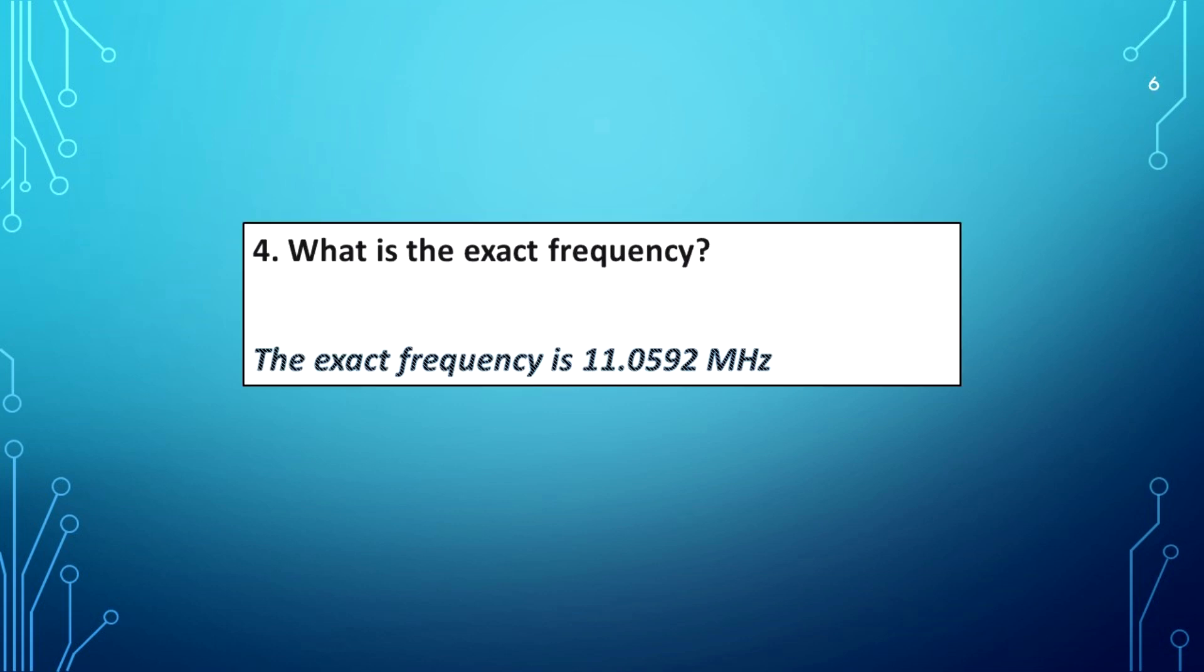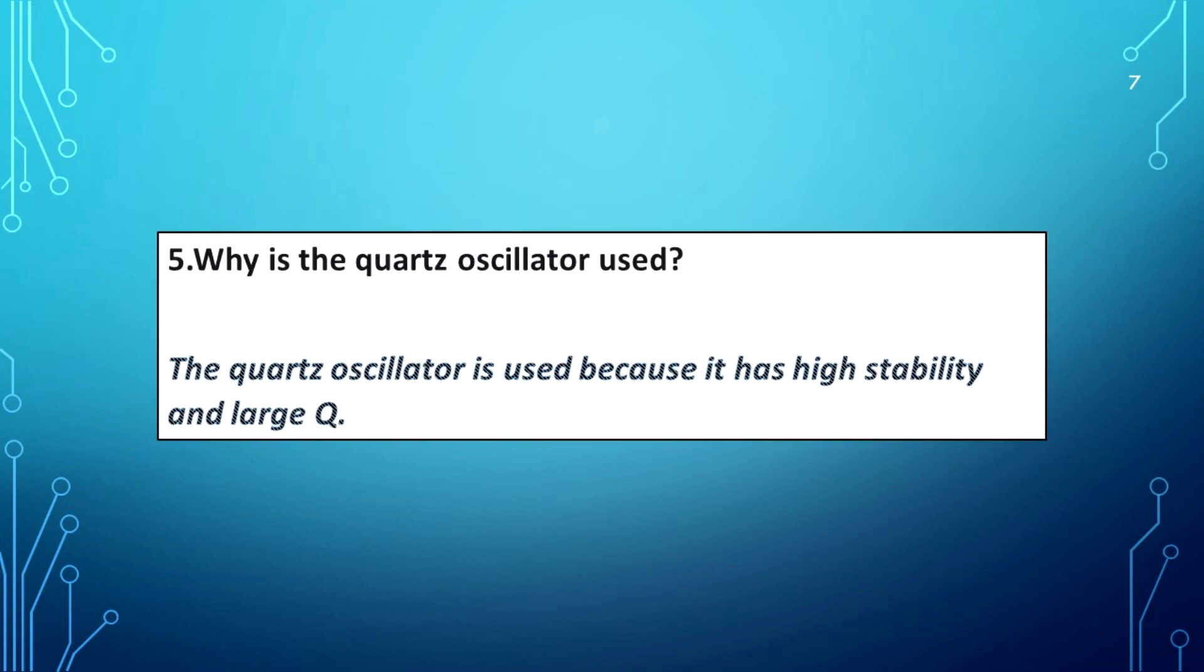What is the exact frequency? The exact frequency is 11.059 MHz. Why is the quartz oscillator used? The quartz oscillator is used because it has high stability and large Q factor.